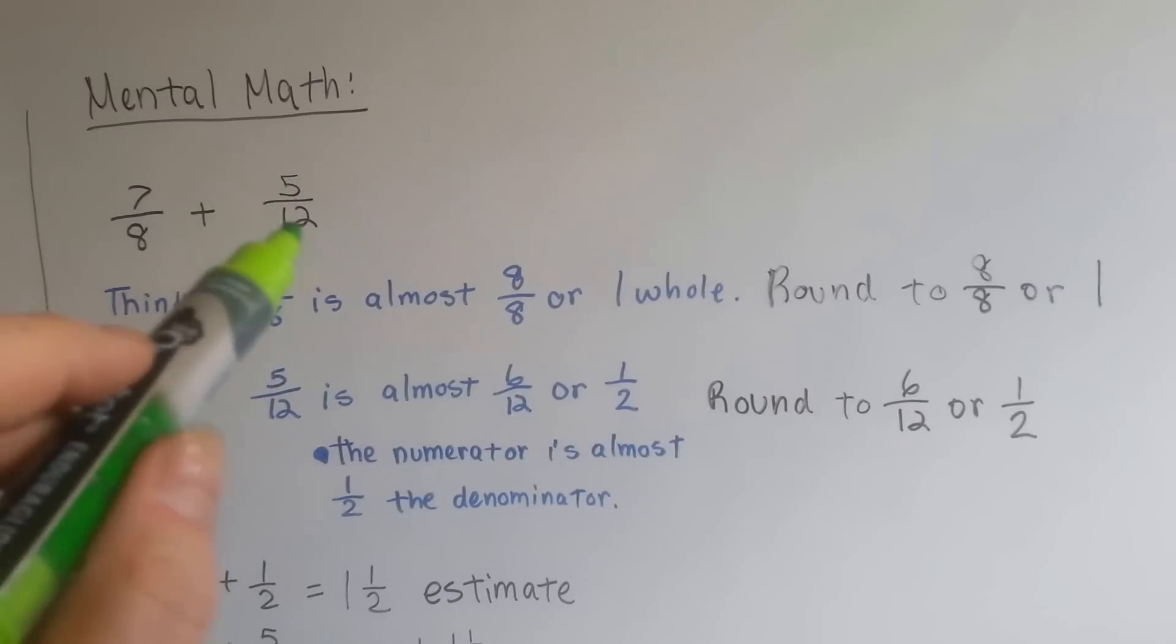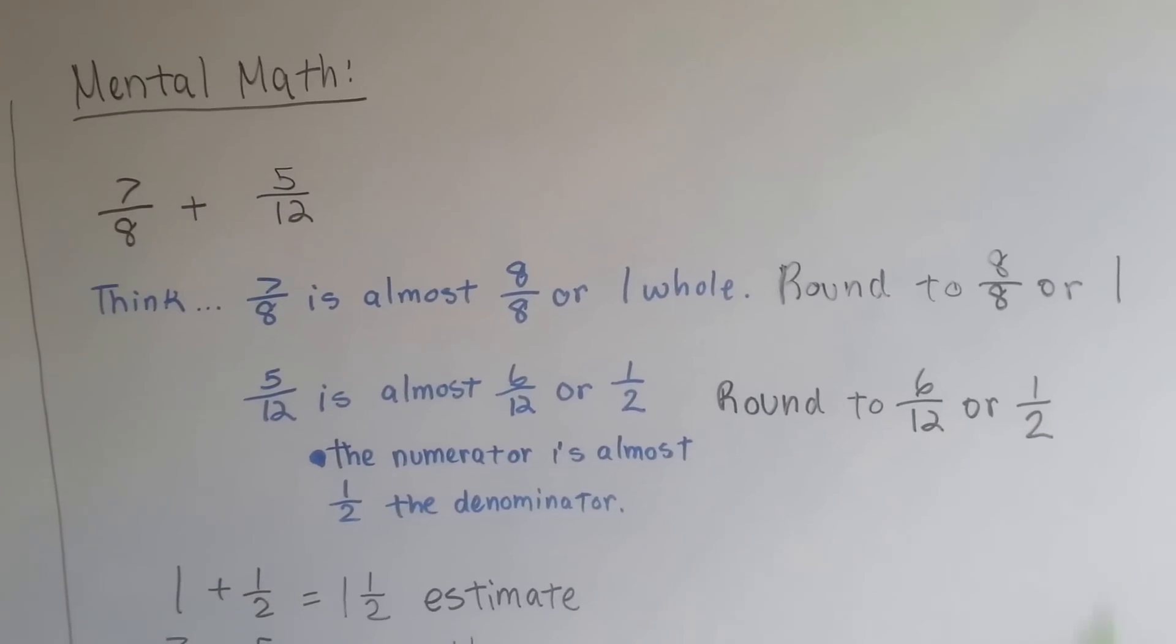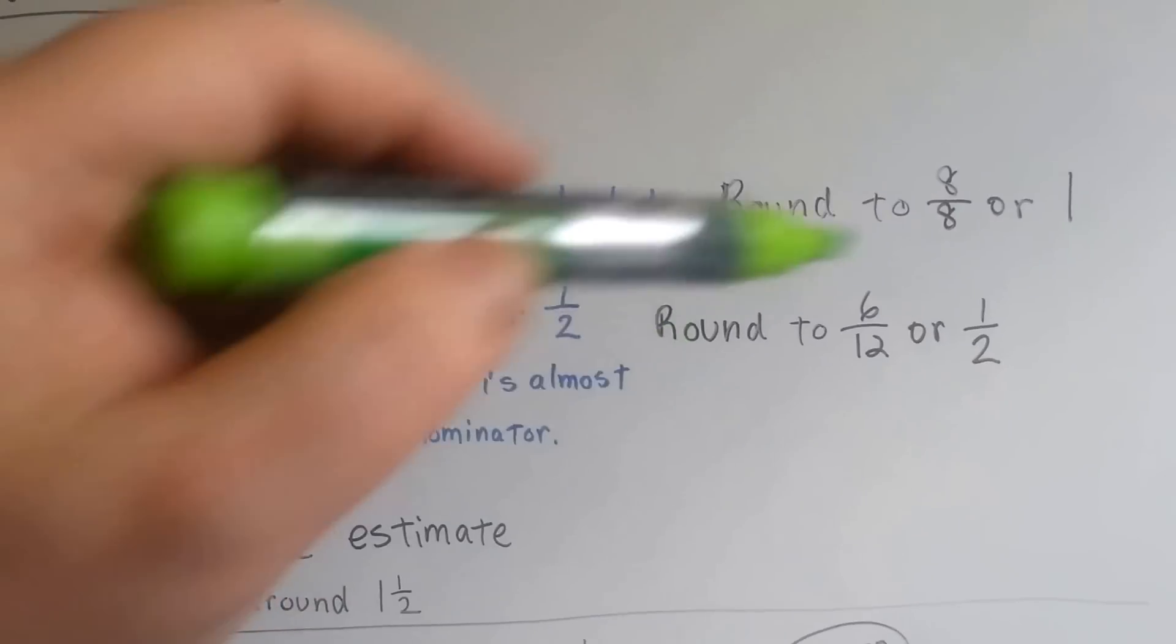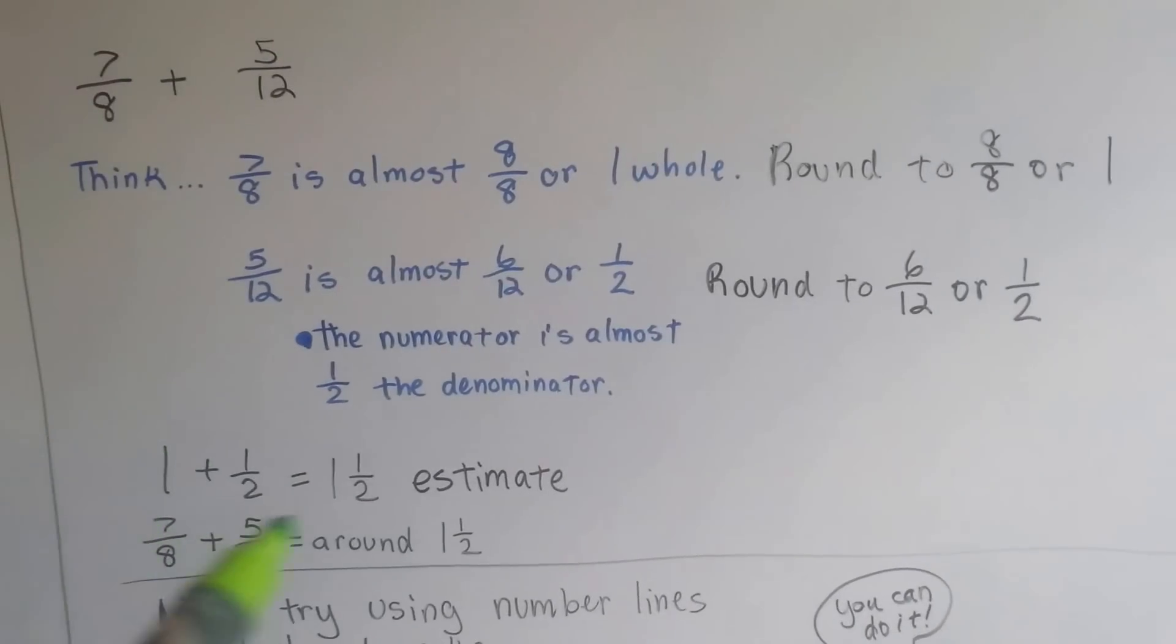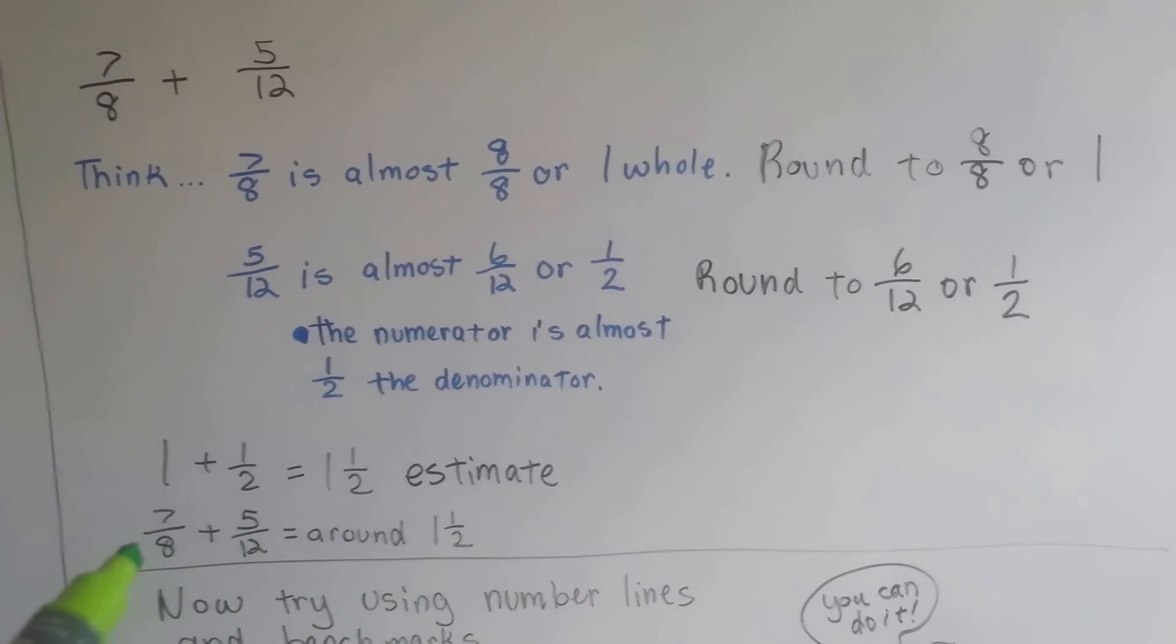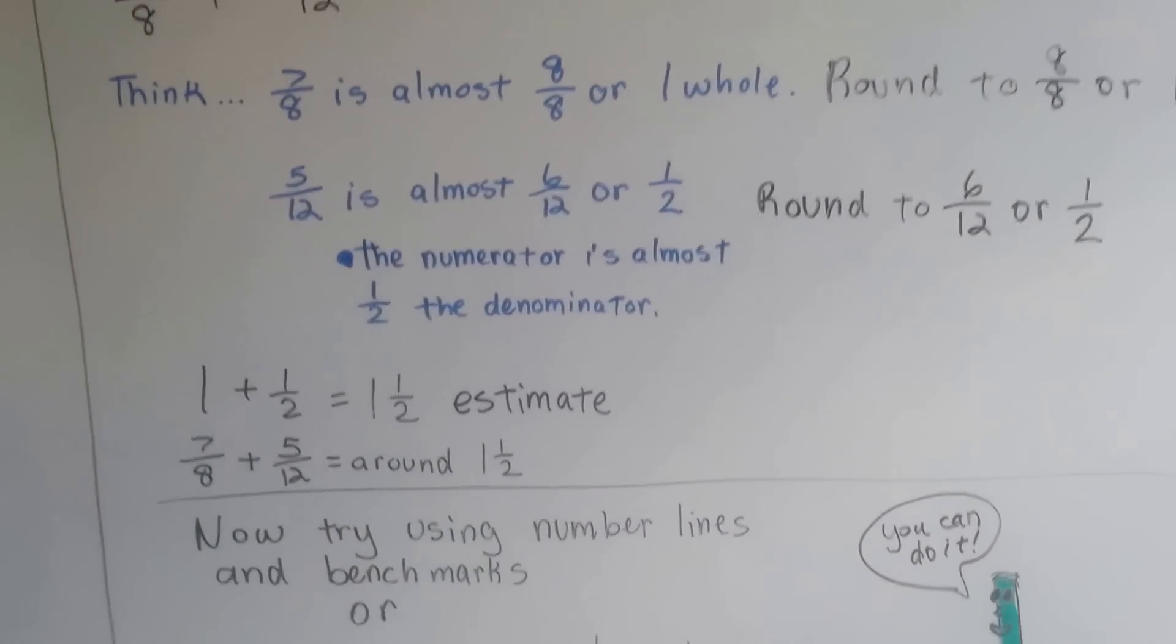See, the numerator is almost half of the denominator, so we can round that to a half. Now we have 1 and a half, so 1 and a half is our estimate. 7 eighths plus 5 twelfths is around 1 and a half.